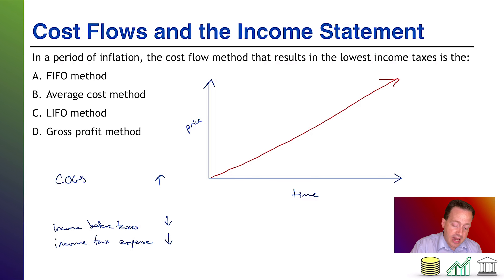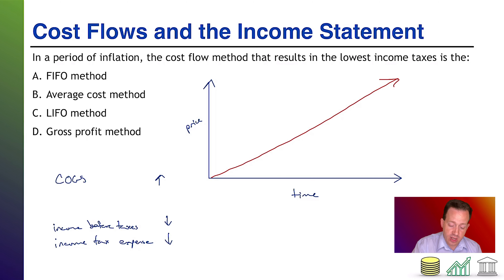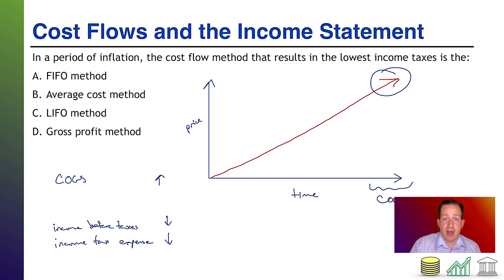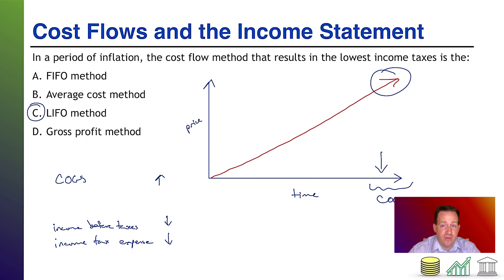We need high COGS. In a period of inflation, high prices occur later in time, meaning we want cost of goods sold to come from the most recent merchandise — the last merchandise in. That's LIFO. In a period of inflation, LIFO drives up cost of goods sold, which drives down income and drives down taxes.